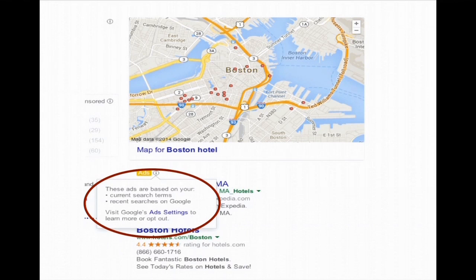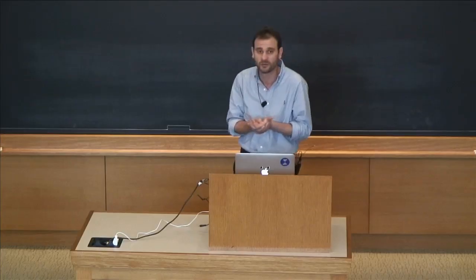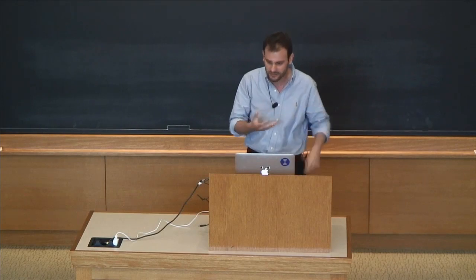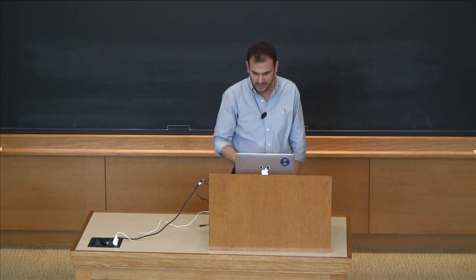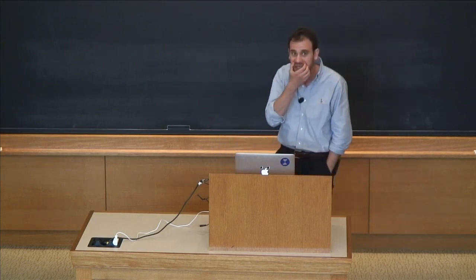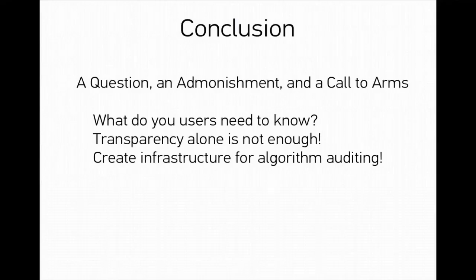We think it might matter what the motive is, but nonetheless we think there is value in showing people why they're getting the recommendation or ad that they're getting. To conclude, I want to end with a question, an admonishment, and a call to arms. The underlying question is: what do users really need to know about algorithms? We've hopefully convinced you that there is value in telling people something about this algorithm. It seems that you may not have to open the hood and look under it — maybe test driving it is good enough.